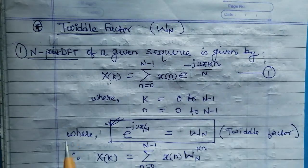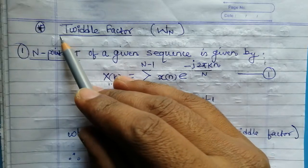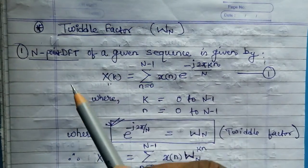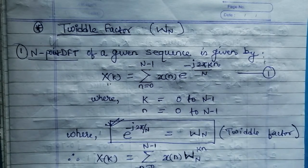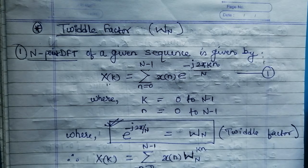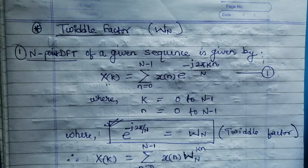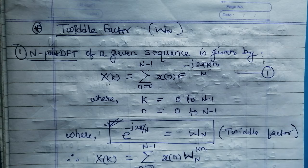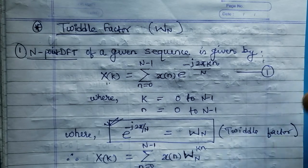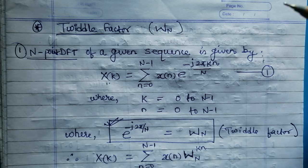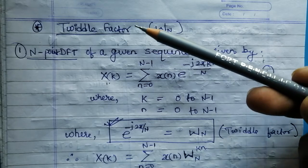Today we will discuss an important topic: the twiddle factor. The twiddle factor is going to play a very important role in the calculation of the Discrete Fourier Transform. In the last lecture, we discussed the direct formula-based DFT calculation method, but as we have seen, if it is asked to find the 8-point or 12-point DFT, that method becomes very lengthy. So now we will take help of the twiddle factor to simplify our calculation.